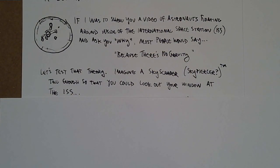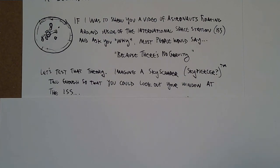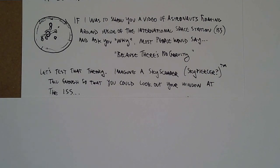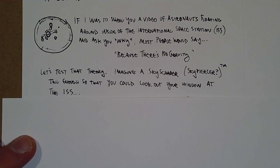A skyscraper is a tall building. A sky piercer is a very, very, very, very tall building. Imagine you've got a skyscraper that is tall enough that you could look out your window and see the International Space Station floating by at the same height you are. What would the gravity be there?